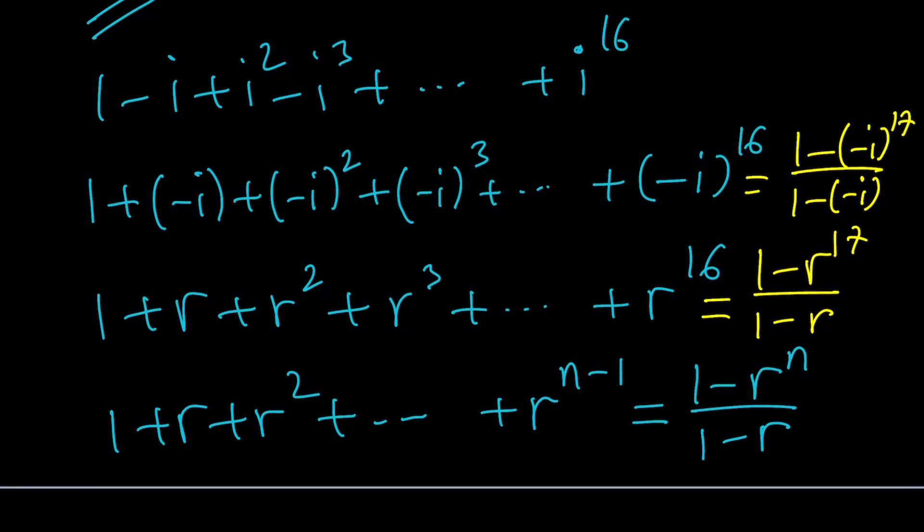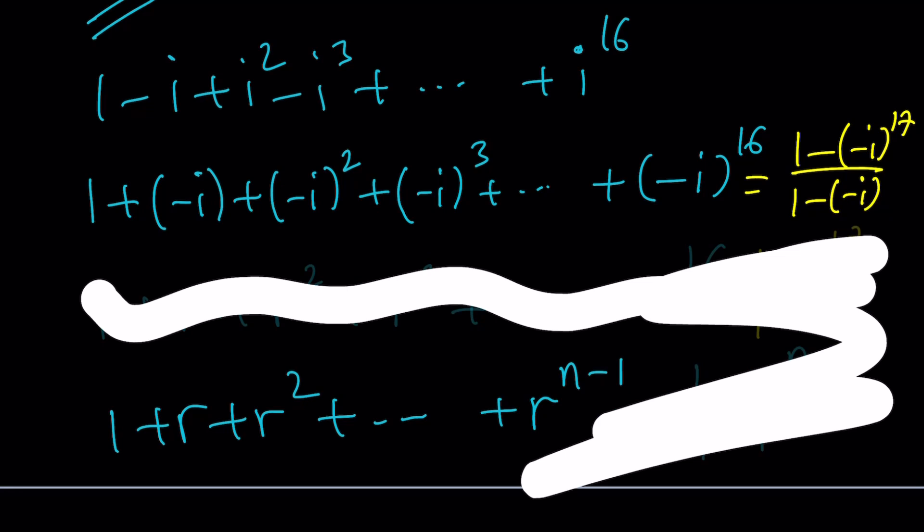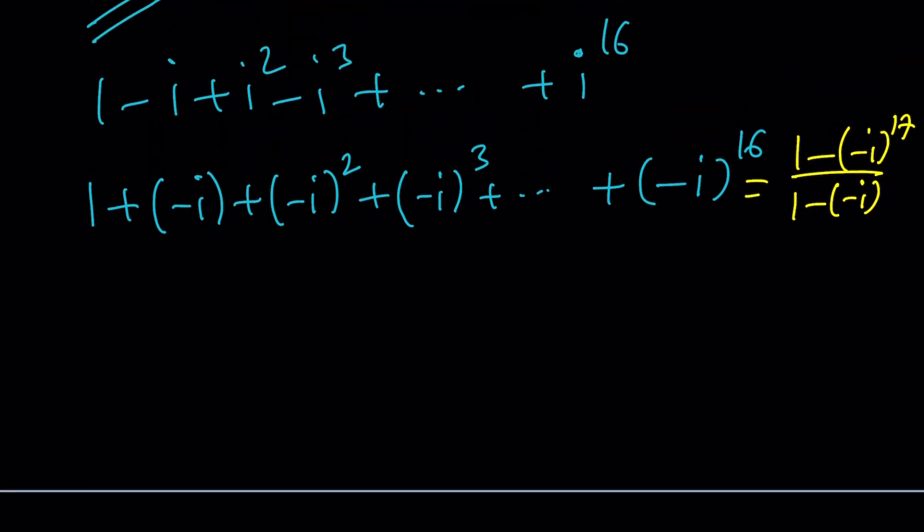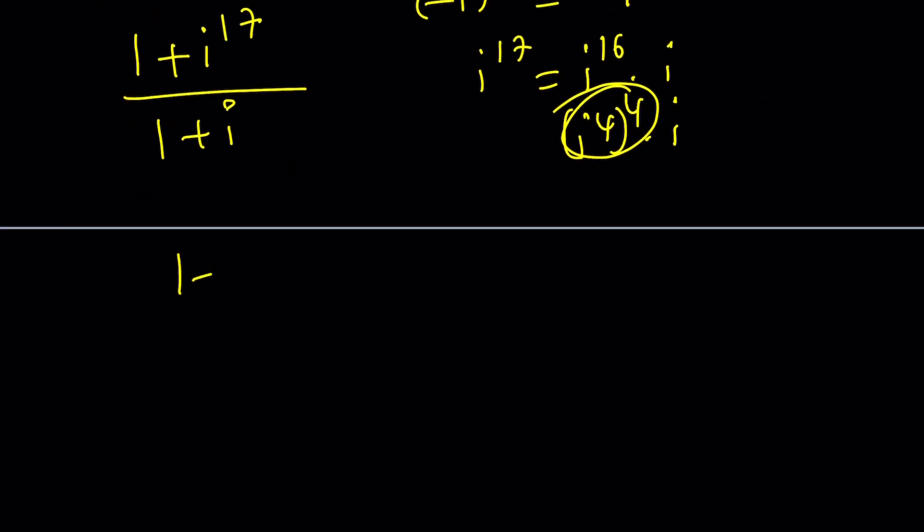Let's go ahead and simplify our expression. So, how do we simplify this? It only has one i in it, so it should be easy to simplify. What is negative i to the 17th power? 17 is an odd number, so another negative is going to make it positive, so this is going to be 1 plus i to the 17th divided by 1 plus i, because negative negative makes a positive. What is i to the power 17? I to the power 17 is i to the 16th times i, and i to the 16th is i to the 4th to the 4th, which is 1, so it's just i. So, this becomes 1 plus i divided by 1 plus i, and since i does not equal negative 1, this is equal to 1.